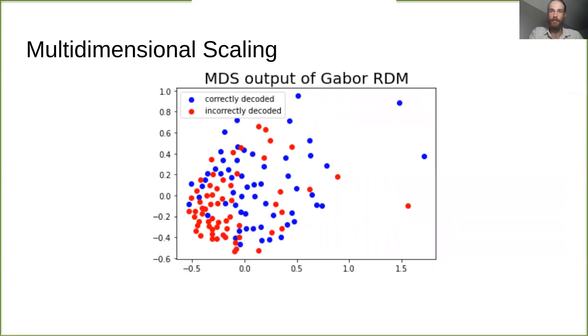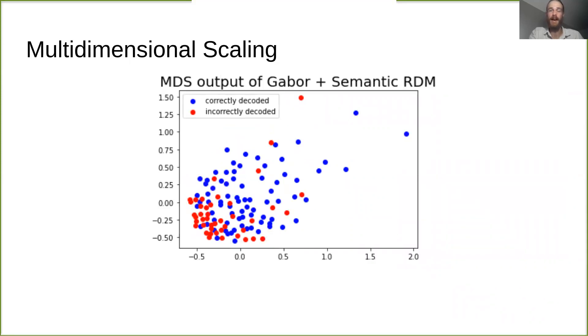But if we look at the results for our Gabor features, we see a relatively striking difference between images based on decoding results. And actually, if we add in our semantic features as well, we see an even clearer difference.